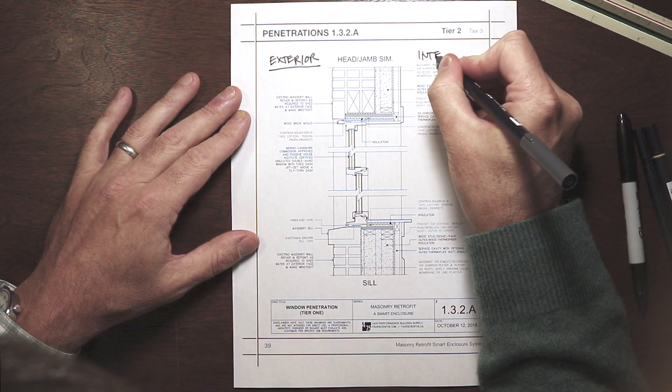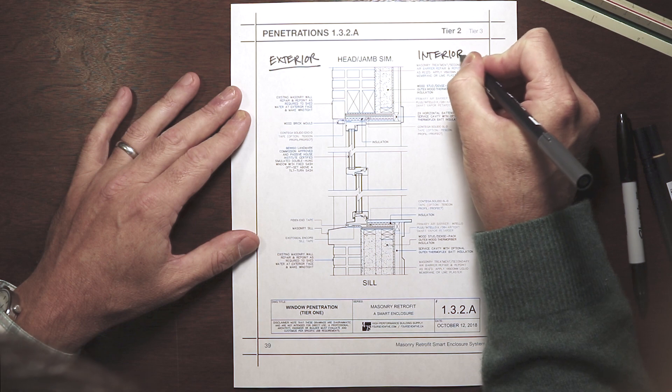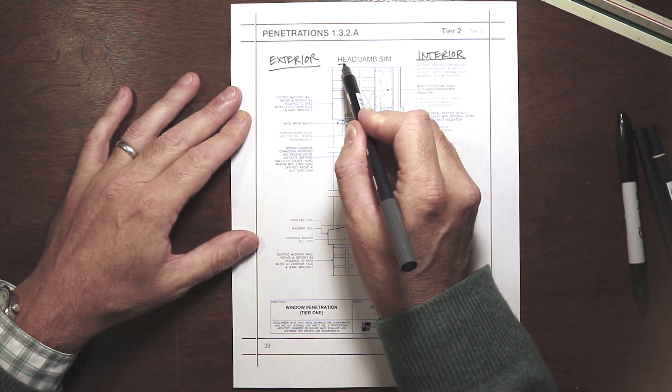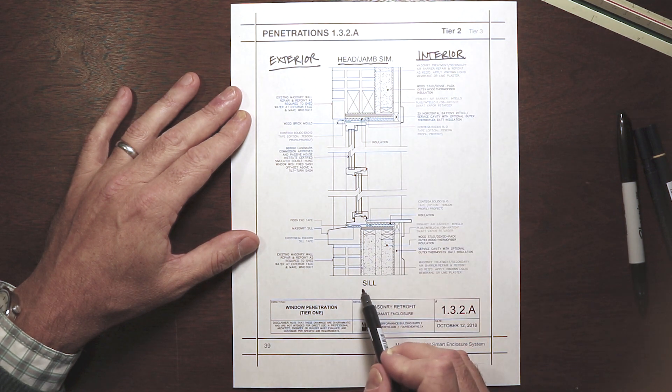Orienting ourselves, the exterior is to the left and interior is to the right. Above is a combination vertical section at the head and a similar plan detail at the jamb. Below is the section detail at the sill.